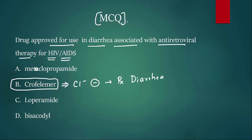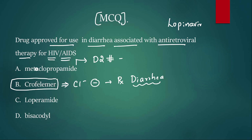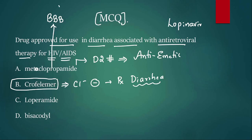Crofelemer is used to manage diarrhea due to antiretroviral therapy — for example, if a patient is on lopinavir and develops diarrhea, we can give crofelemer, which inhibits chloride channels in the intestine. Metoclopramide is an anti-emetic; it is a D2 blocker, and by blocking D2 receptors it has anti-emetic properties. However, it crosses the blood-brain barrier and can cause acute dystonia.